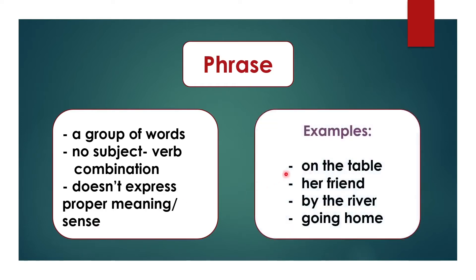Let me give you some examples. 'On the table' — here we are using just a group of words, but it doesn't make any sense because there is no subject-verb combination. 'Her friend' — here again we are using words without any proper meaning and there is no subject-verb combination. 'By the river' — here there is no subject and verb. 'Going home' — just words without any meaning and without subject-verb combination.